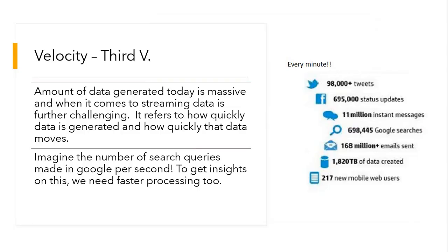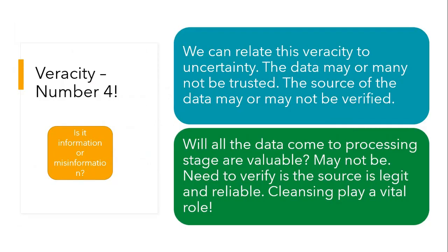The next one is velocity. The amount of data generated today is really massive, and when it comes to streaming data it becomes even more challenging. Velocity refers to how quickly data is generated and how quickly it moves. Think about the number of queries made on Google per second. Every minute: 98,000-plus tweets are posted, 695,000 status messages go on Facebook, 11 million instant messages are sent, 698,445 Google searches happen, and 168 million-plus emails are sent. The speed at which data is generated is a very important characteristic.